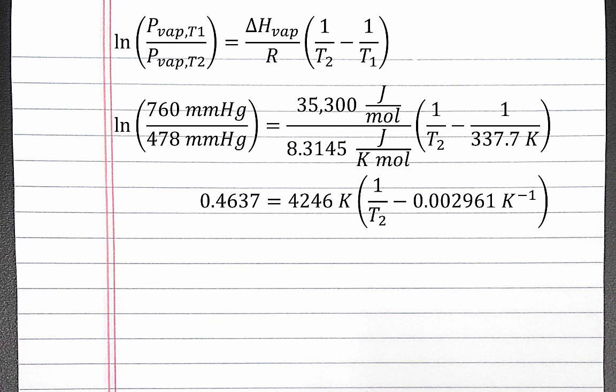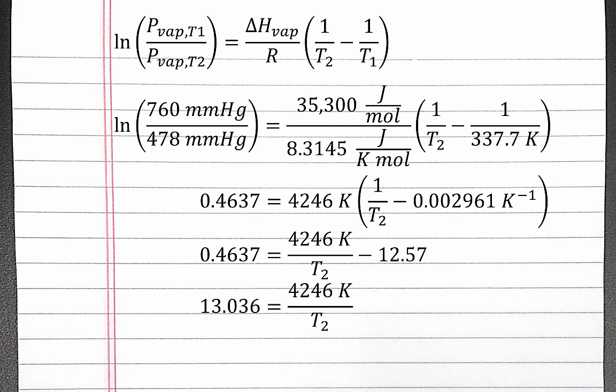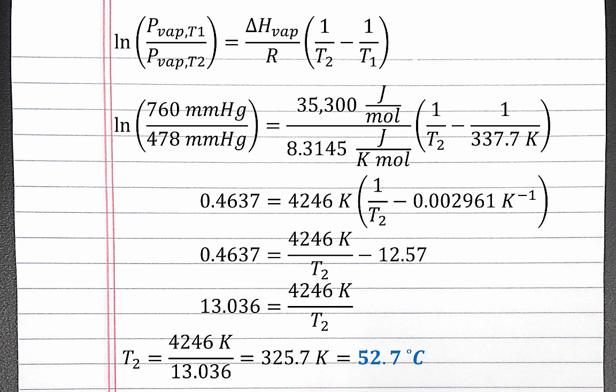Next, we distribute the 4,246 on the right side of the equation. Then we add 12.57 to both sides, and finally multiply both sides by T2 and divide by 13.036. T2 equals 4,246 Kelvin divided by 13.036, which is 325.7 Kelvin. Converting back to degrees Celsius, that is 52.7 degrees Celsius.